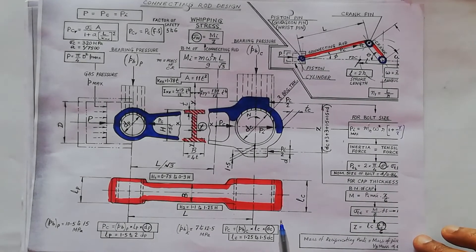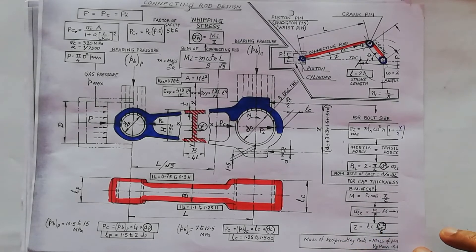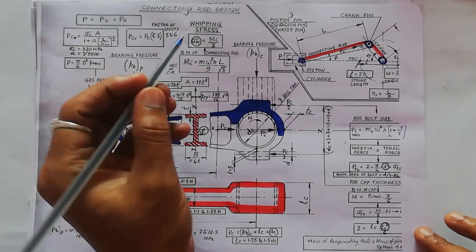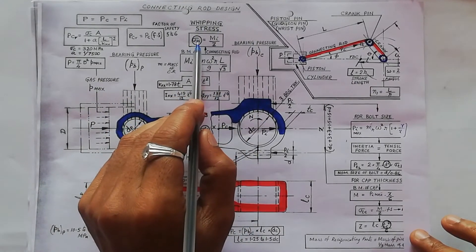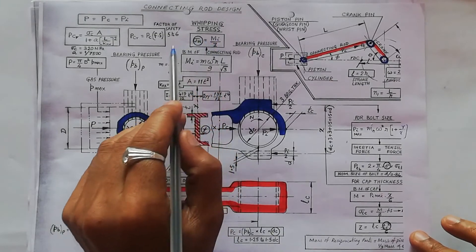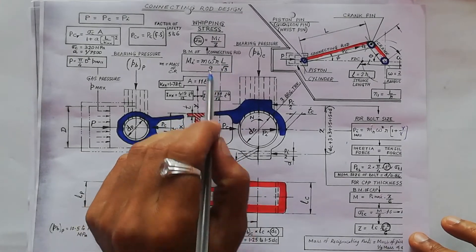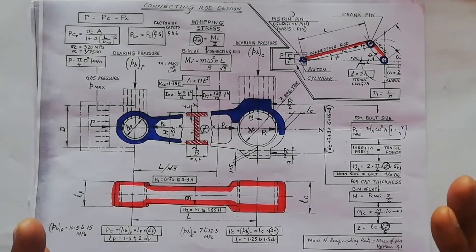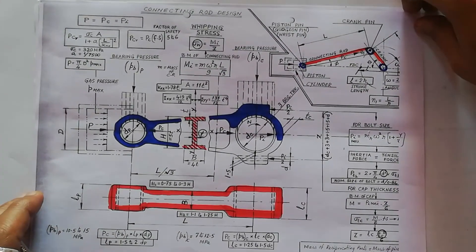For the thickness of the big end cap, use Z equals Lc times Tc squared divided by 6. After that, calculate the bending stresses in the connecting rod: sigma_w equals M divided by Z, where the maximum bending moment M equals m times omega squared times R times L divided by 9 root 3. These are the formulas compiled into one sheet for reference while solving problems. Thank you for watching.